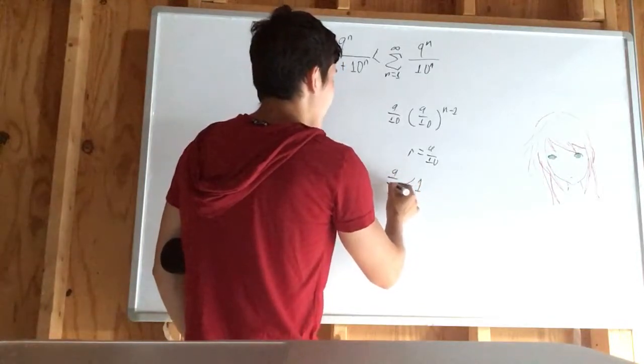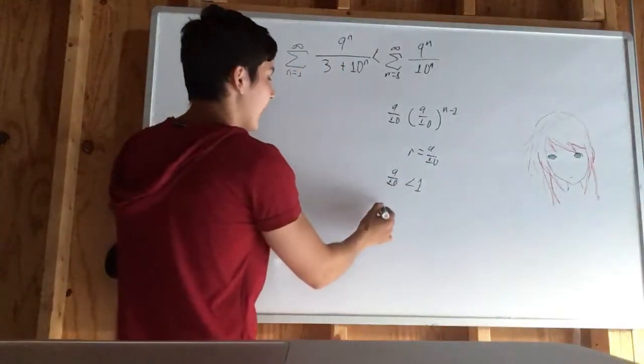9 tenths is less than 1. When you have r being less than 1, it converges.